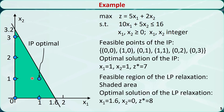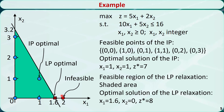The feasible region of the linear programming relaxation is marked by the shaded area. The optimal solution is the extreme point x1 = 1.6, x2 = 0, with z* = 8. If we round down to the point (1, 0), the z value is 5, and it is not optimal. If we round up to the point (2, 0), this point is not feasible because it violates the constraint. So that's why we cannot use the rounding method to solve an integer programming problem.